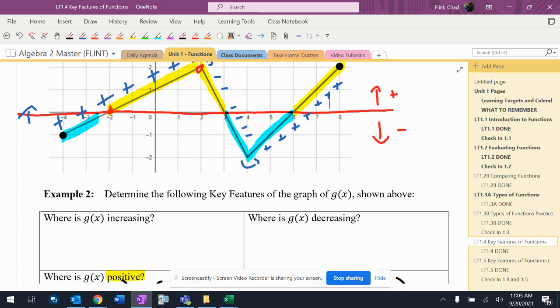So where is g(x) increasing? Well, it's increasing starting at negative four up to two. And again, when we do increasing and decreasing, we can use brackets. I'm not really going to hit anybody for points if you use parentheses on this specific one. And then from four over to eight, it's also increasing.